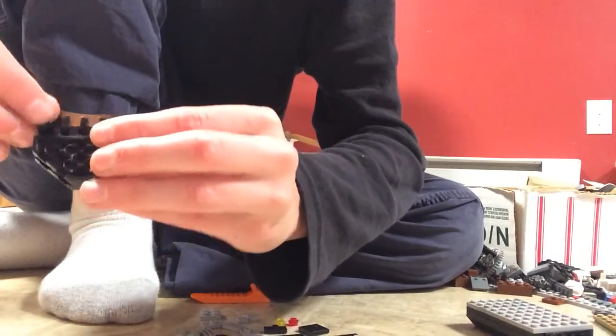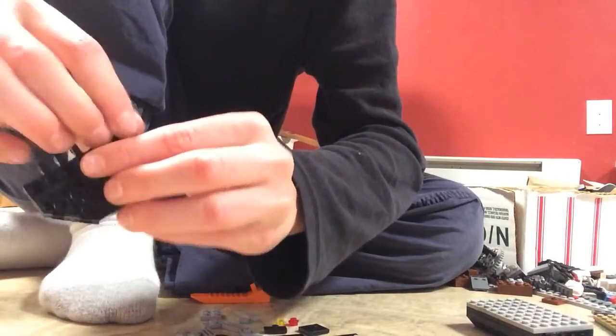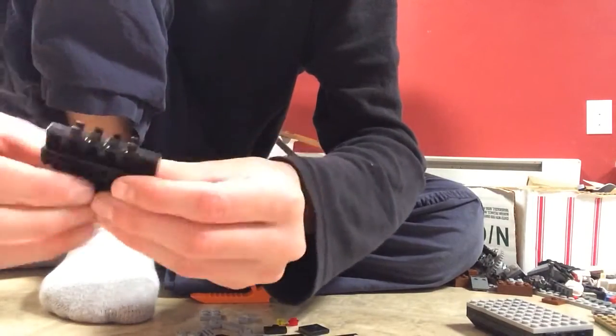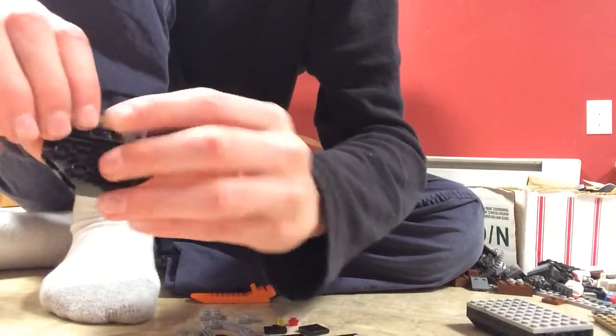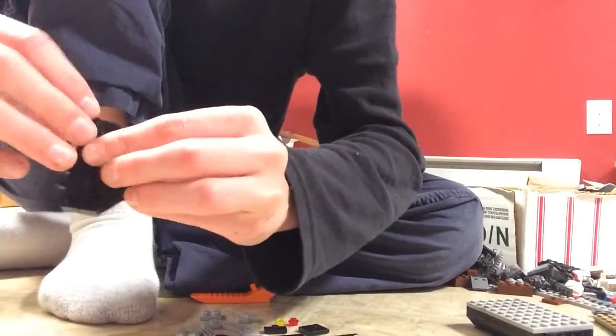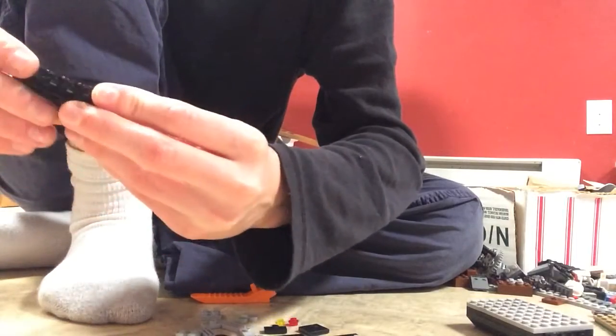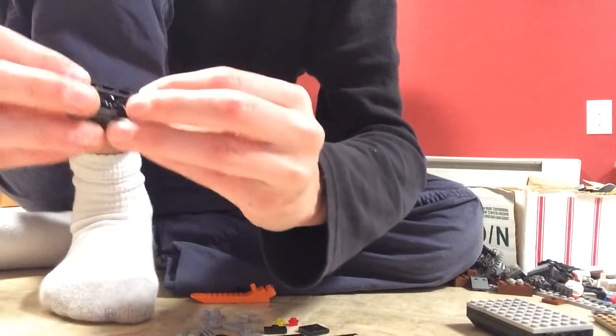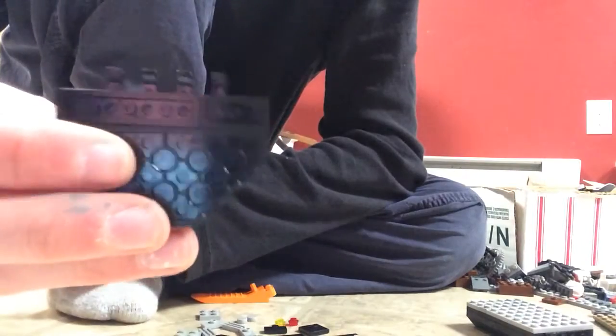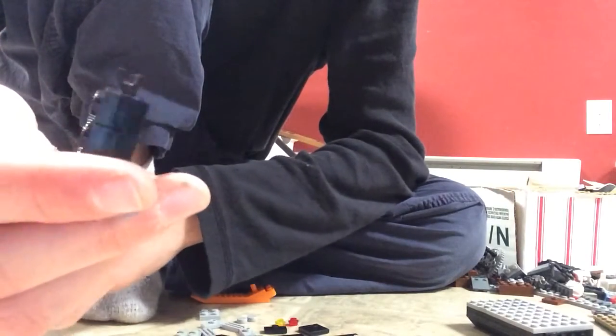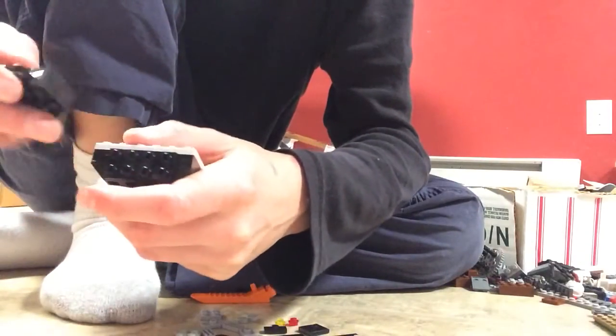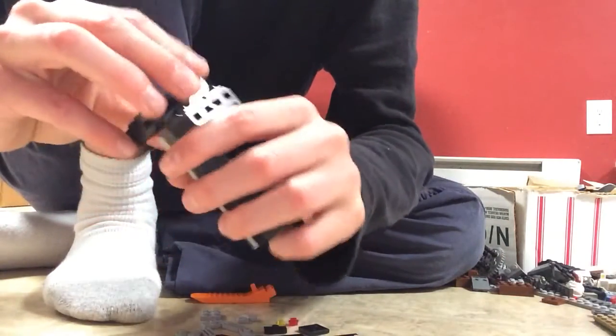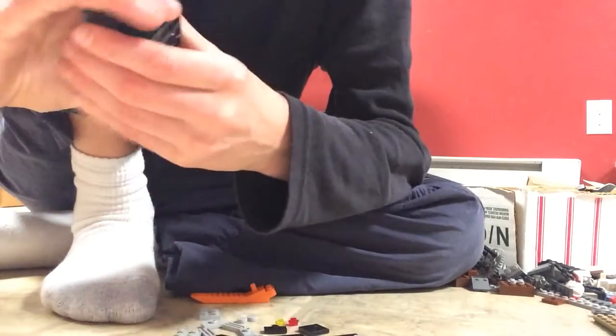Then 1x1s on the ends like that. And then just another 1x6, or two 1x3s, or as I did, a 1x4 and a 1x2. That's how it should look. And this connects right on to here with these two bottom studs. Like that.